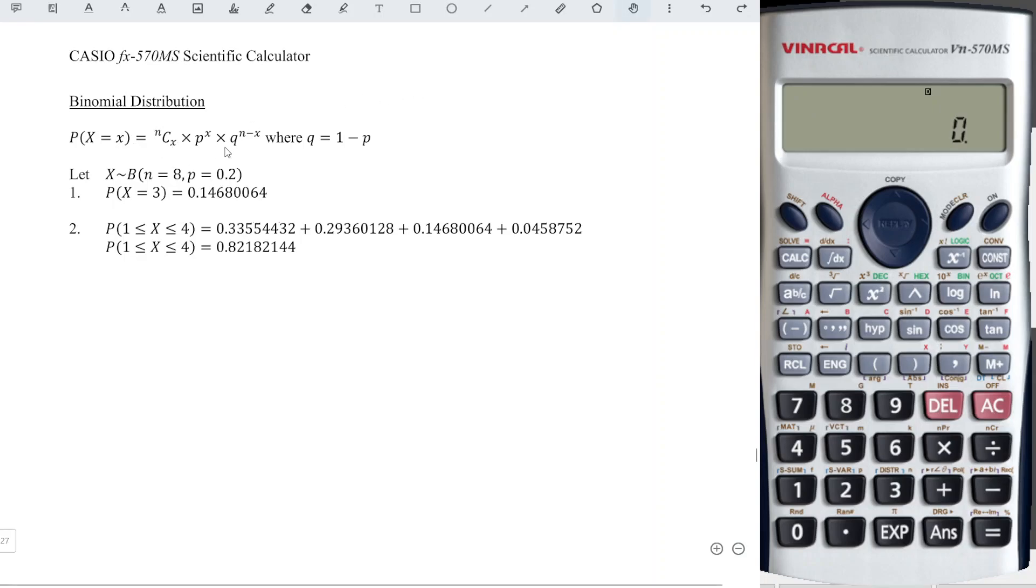First, input the function of a binomial distribution by assuming that n and p are fixed, since most of the time they are given. So we have n which is 8, input 8, and we have C combination, shift, divide.